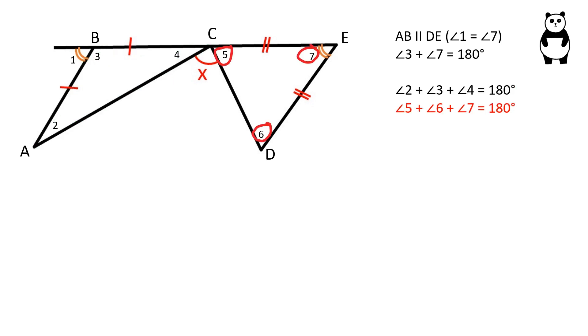Also, the sum of angles 5, 6, and 7 is 180 degrees because it's the sum of the interior angles of a triangle. The sum of these 6 angles is 360 degrees, and since angle 3 plus angle 7 is equal to 180 degrees, we can subtract angle 3 and angle 7 from the left side of the equation and 180 from the right side.